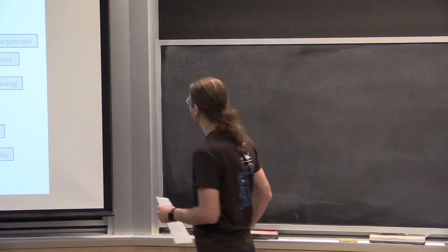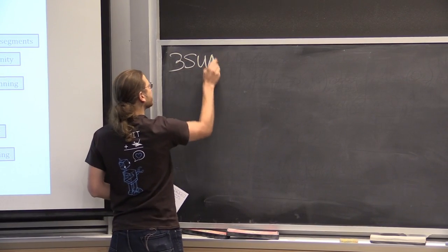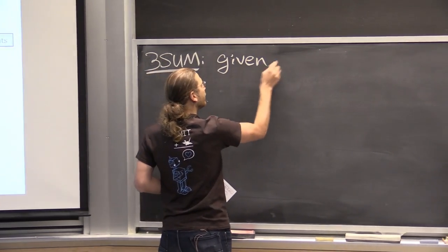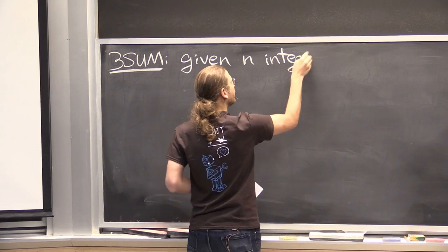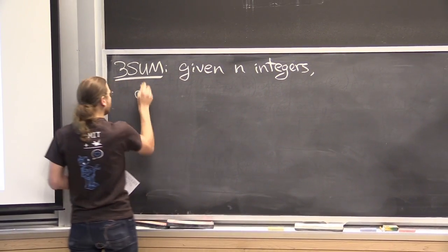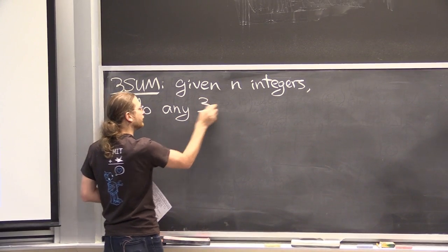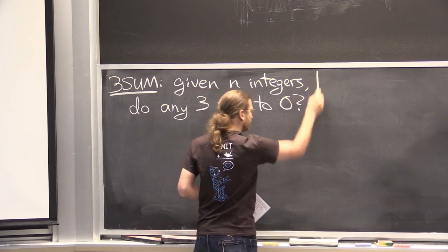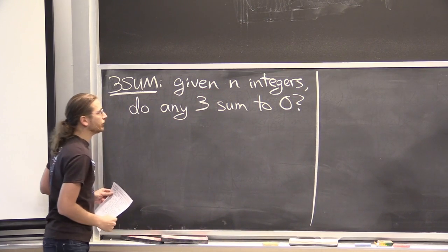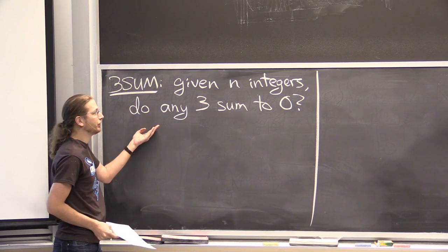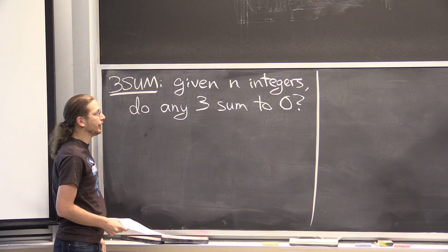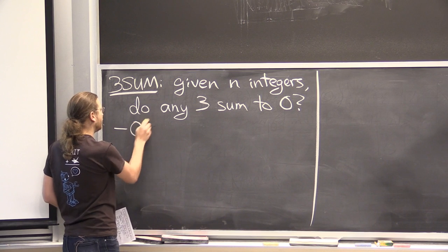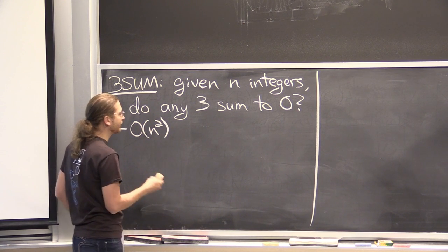The most popular problem for this is called 3-SUM: you're given n integers, and you want to know whether any three of them sum to 0. Of course, you can solve this in cubic time by testing all triples. But you can also solve it in quadratic time — the algorithms are quite easy.